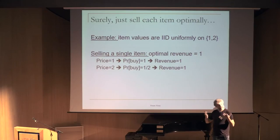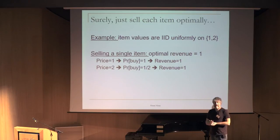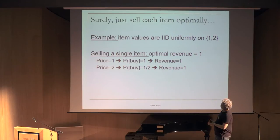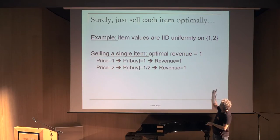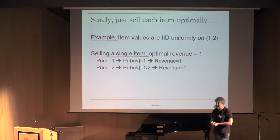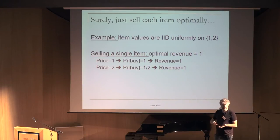Here's a surprising example. Suppose one item has value uniform on {1, 2}. As a seller, I can sell at price 1 — the buyer certainly buys, revenue is 1 — or at price 2, the buyer buys with probability one-half, expected revenue is also 1. So the best I can do for one item is revenue 1, and it seems I should get revenue 2 for two such items.